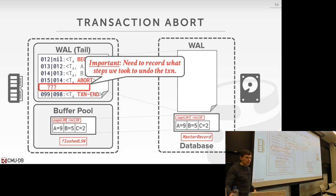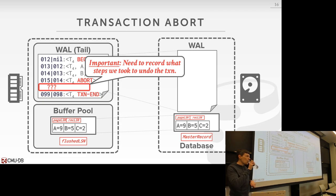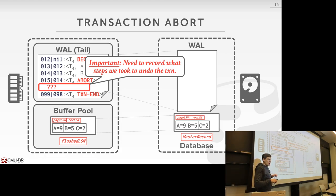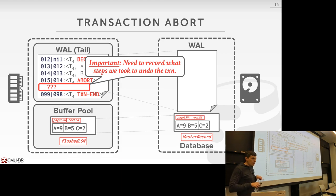Why do we need to reverse if we haven't written anything to disk? How do you know? In a real system: we don't know — we're not logging what pages we write to disk. We don't know anything about what we've got written to disk, because the eviction policy is doing its own thing. That's why we're going to play it safe and just reverse everything.